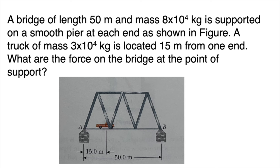A bridge of length 50 meters and mass 8 times 10 to the 4 kilograms is supported on a smooth pier at each end. A truck of mass 3 times 10 to the 4 kilograms is located 15 meters from one end. What are the forces on the bridge at the points of support? You have a bridge with two columns holding it up — we're asking what is force A and what is force B.